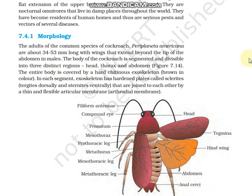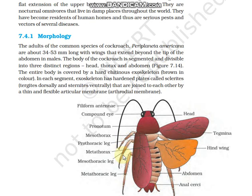Now let's go into morphology, which I'll explain using this diagram. There is a head part with compound eyes and filiform antenna. There is the tegma (mesothoracic wing) and the metathoracic wing. The metathoracic wing is used for flying; the tegma is not used for flying. There are three pairs of legs: prothoracic, mesothoracic, and metathoracic. The abdominal part has anal cerci, present on the 9th sternum.